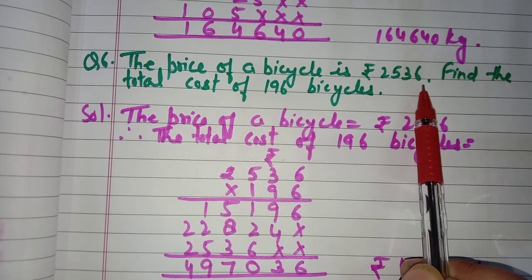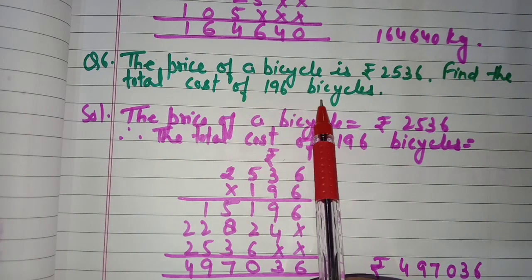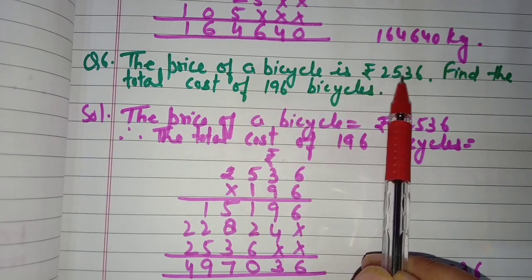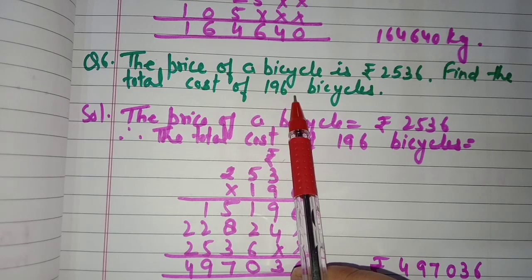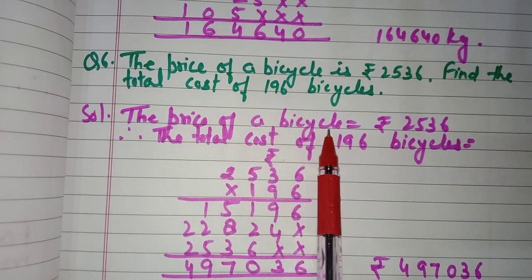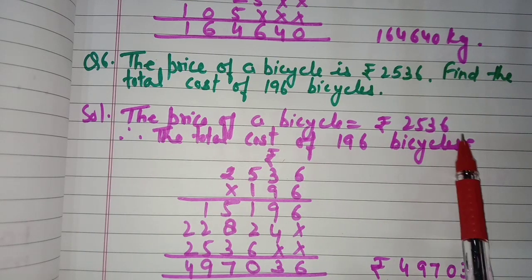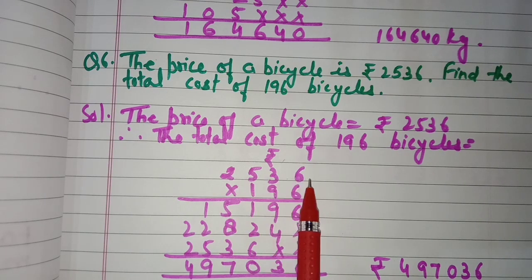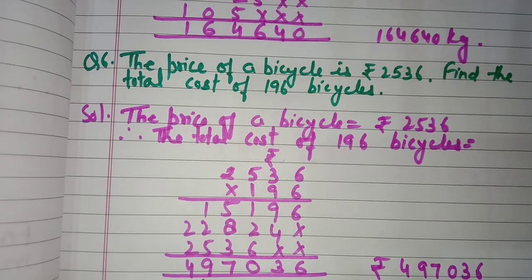Question number six: the price of a bicycle is rupees 2536. Find the total cost of 196 bicycles. The cost of one bicycle is given, and we need to find the cost of 196 bicycles by multiplying. Price of a bicycle: rupees 2536. Therefore, total cost of 196 bicycles — we multiply 2536 by 196.